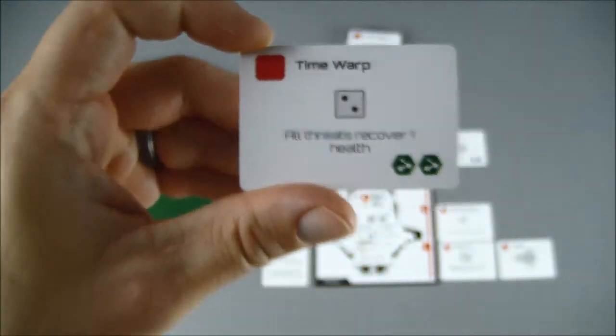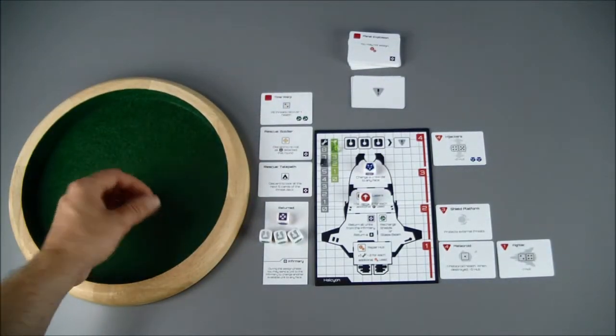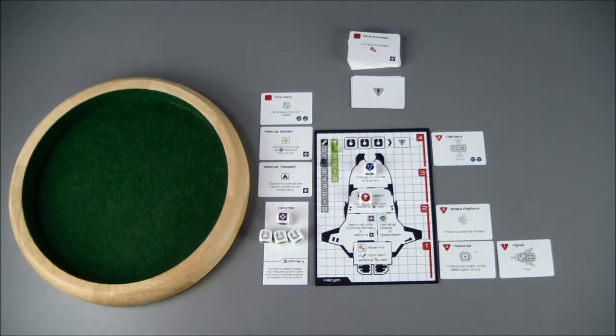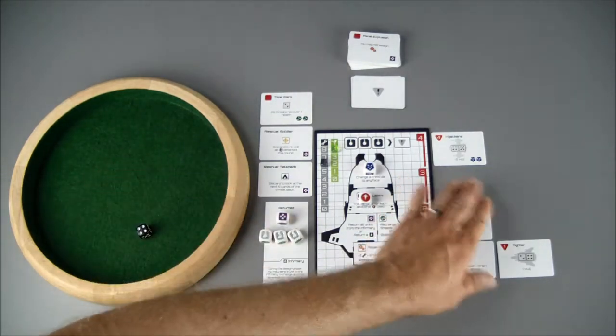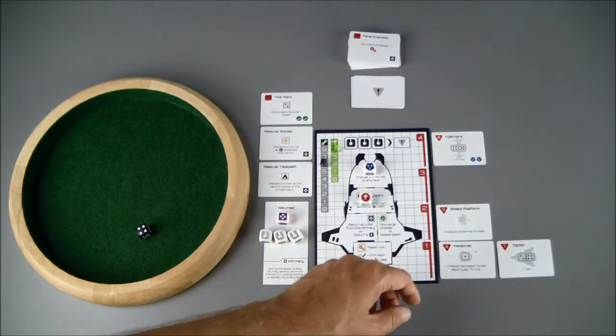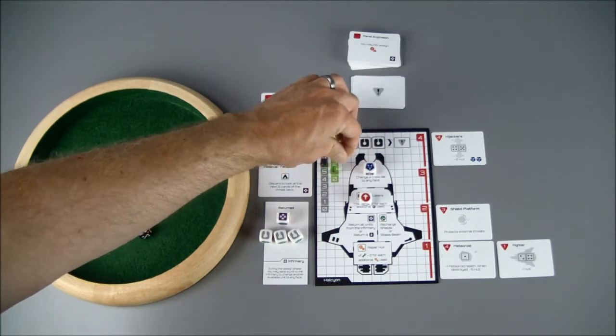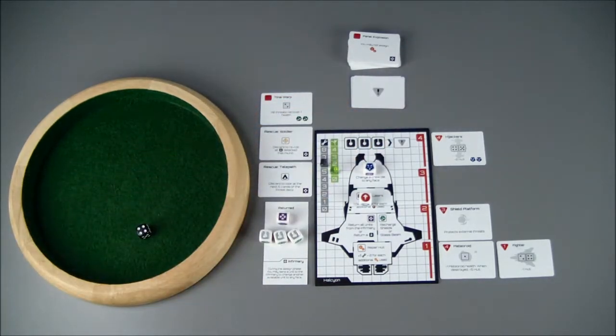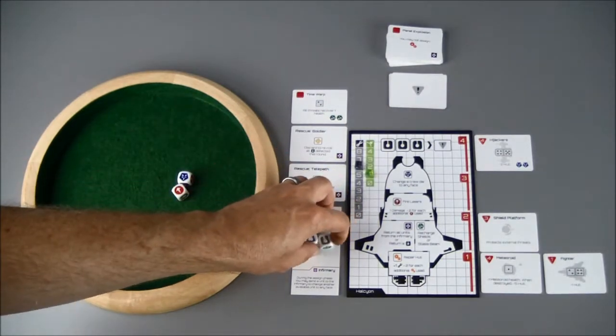See what my next external threat is and it's time warp. If I roll a two, all threats recover one health. That's not good. And it's a four. Which is the fighter and the hijackers for a total of three, knocking the shields all the way down to one.